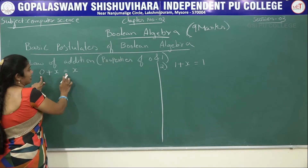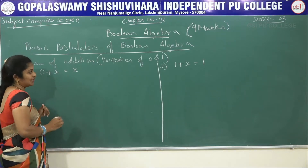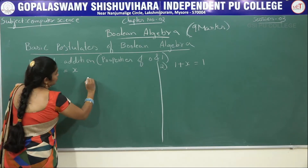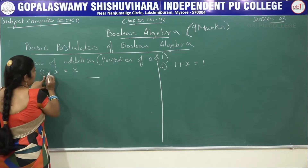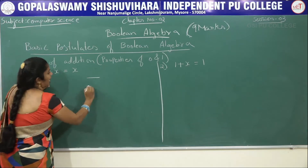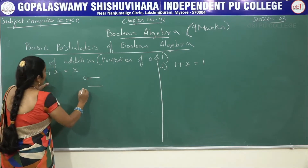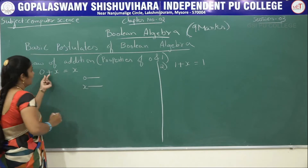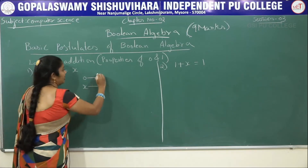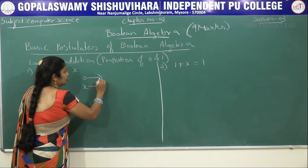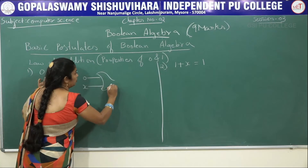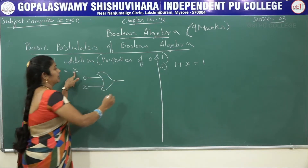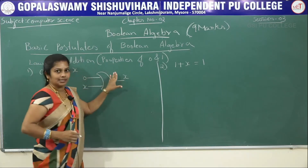For the expression 0 + x = x, how do we draw the symbol? We have a plus operator, so one input is zero and the other is x. A plus operator is drawn as a reverse C-shape (OR gate), and the output we get is x. This is the circuit symbol for 0 + x = x.